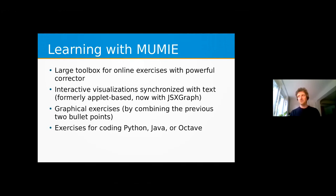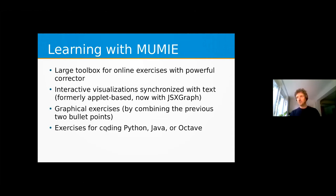By combining this powerful corrector tool and the interactive visualizations, we now also have graphical exercises where the student has to interact with the graphics to solve problems. Also, which might be interesting for computer science, we have exercises for coding in Python, Java, and Octave. The main things I want to talk about now are really the interactive visualizations synchronized with text and the graphical exercises.